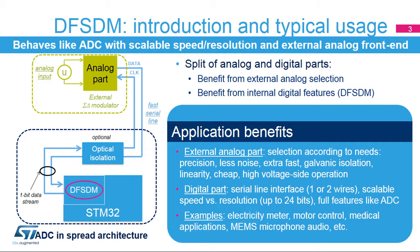The external analog part is usually a Sigma Delta modulator offered by a wide range of vendors. This feature offers the possibility to choose a specific analog part according to the user needs, like galvanic isolation for motor control or metering applications, with a low-noise and high-precision analog part for sensor data acquisition applications, or an inexpensive analog part for price-sensitive applications.